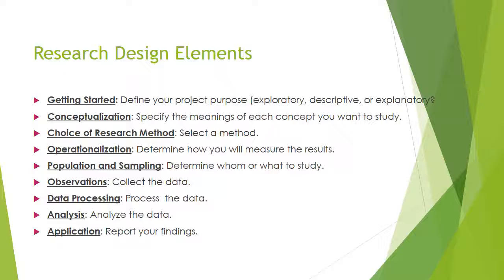Your choice of research method — experiments, surveys, field research, content analysis — depends on the study and what you're trying to accomplish, and really the resources you have. Experiments are probably the most ideal type of research method but can be the most costly. Operationalization: determine how you will measure your results. For example, frequency — how many times someone goes out a week, a month, a year to pick up trash or do a neighborhood watch. You also have to look at the population and determine what or whom you are going to study, which takes us to our unit of analysis — individuals or groups — and how we're going to sample.